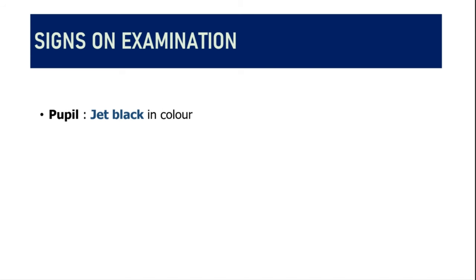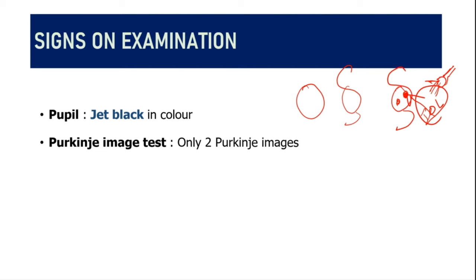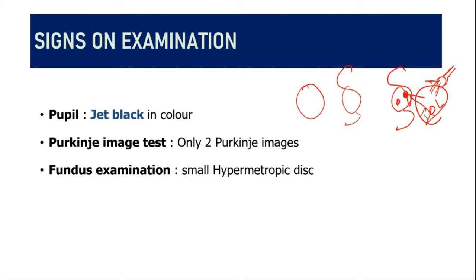In pseudophakia, the intraocular lens produces a shining reflex under slit lamp or torch examination. In aphakia, the pupillary area is empty and the pupil appears jet black. The number of Purkinje images also guides diagnosis: in a normal eye there are four Purkinje images — from the anterior and posterior corneal surfaces and the anterior and posterior lens surfaces — whereas in aphakia there are only two, from the corneal surfaces alone. Refraction reveals high hypermetropia, and fundus examination shows a small hypermetropic disc.